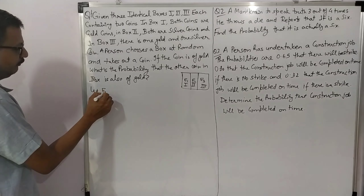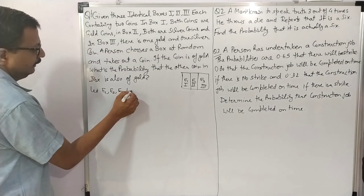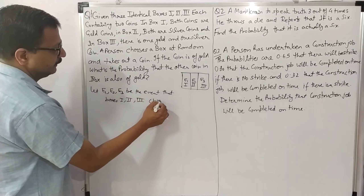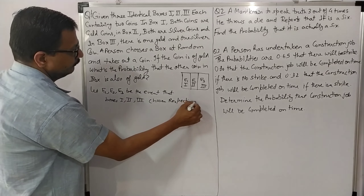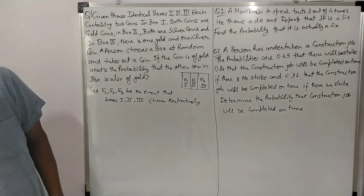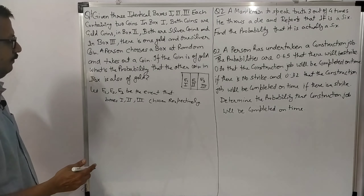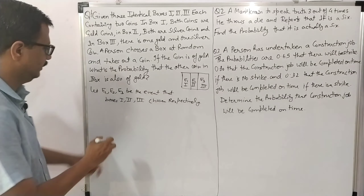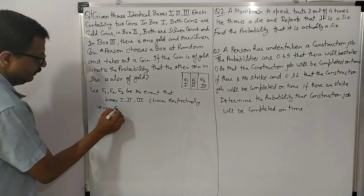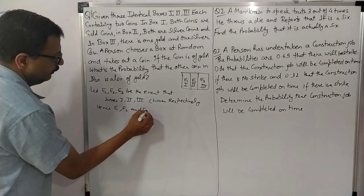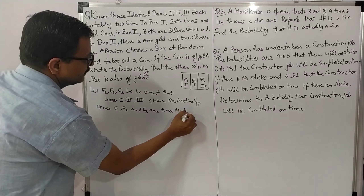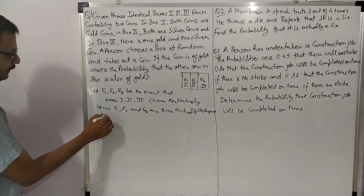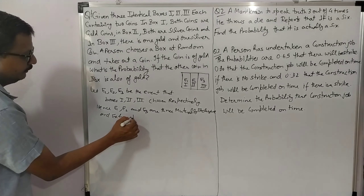Let E1, E2, E3 be the events that box 1, 2, and 3 are chosen respectively. Hence E1, E2, and E3 are 3 mutually exclusive and exhaustive events.